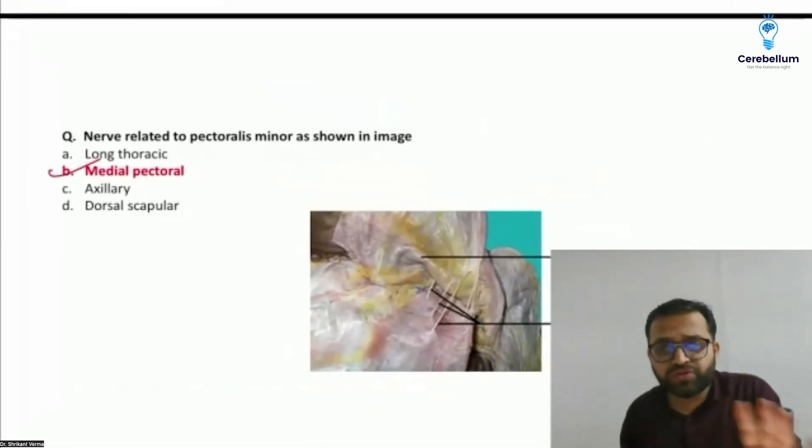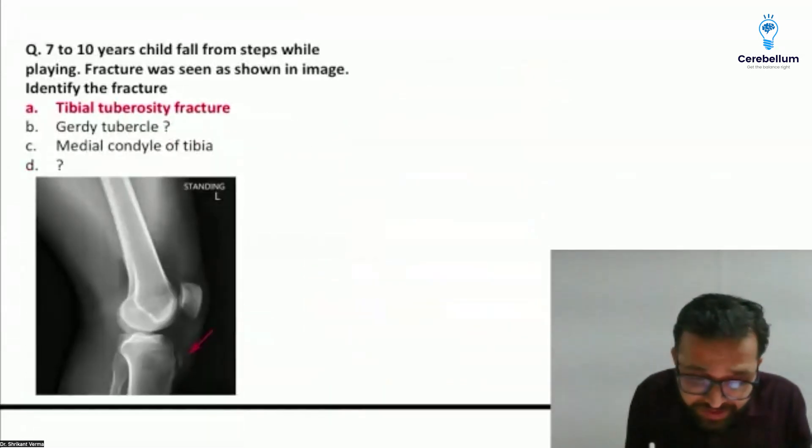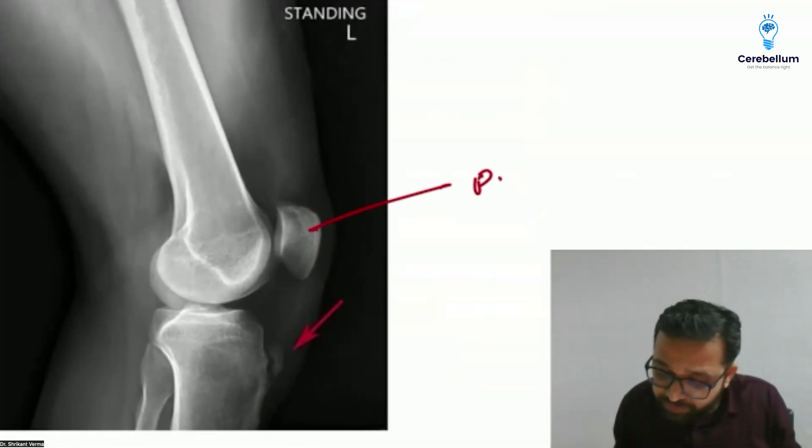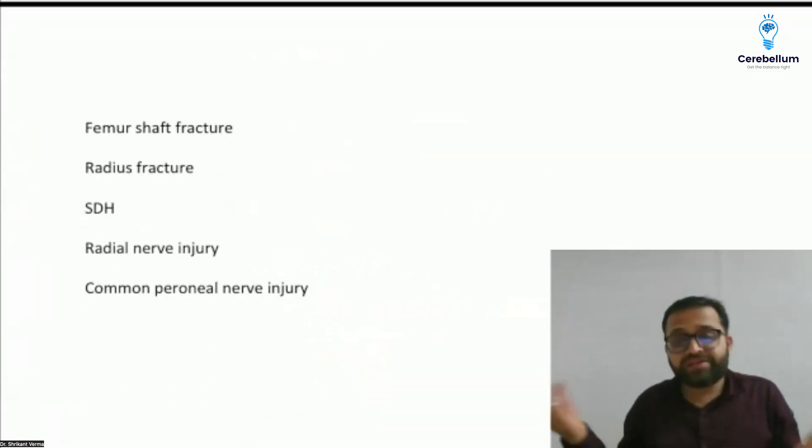Now this is the portion with the orthopedic integration. Seven to ten year child fall from the steps while playing, fracture was shown in the image - which bony part is fractured? You can see this is our patella, we had seen the surface marking, and this part is our tibial tuberosity. So tibial tuberosity fracture was there.